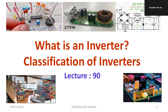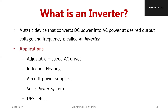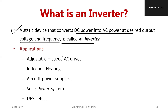Welcome to the lecture series on power electronics. In this session I am going to discuss what is an inverter and how do you classify inverters based on certain criteria. An inverter is a static device that converts DC power into AC power at desired voltage and frequency. Depending on the requirement, we can use inverters for variable speed AC drives, induction heating, aircraft power supplies, solar power systems, UPS, etc. The output of solar power is basically DC, but our systems are designed for AC, so we require an inverter to convert DC into AC.